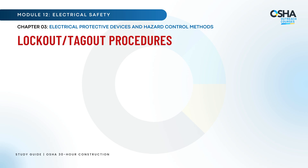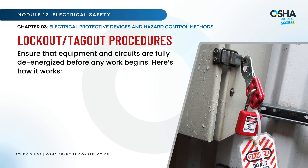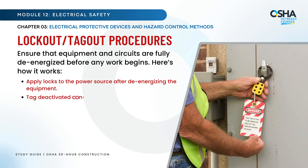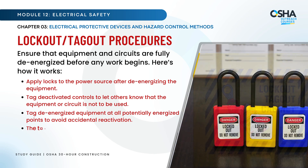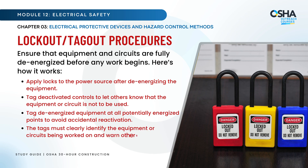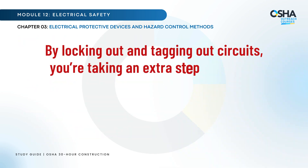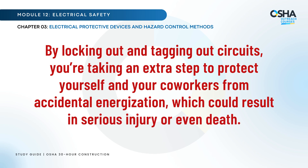Lockout/tagout procedures ensure that equipment and circuits are fully de-energized before any work begins. Here's how it works: apply locks to the power source after de-energizing the equipment; tag deactivated controls to let others know the equipment or circuit is not to be used; and tag de-energized equipment at all potentially energized points to avoid accidental reactivation. The tags must clearly identify the equipment or circuits being worked on and warn others not to energize them. By locking out and tagging out circuits, you're taking an extra step to protect yourself and your co-workers from accidental energization, which could result in serious injury or even death.